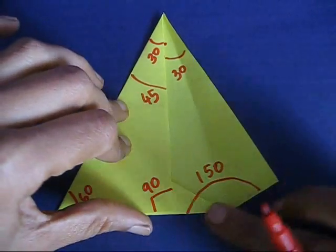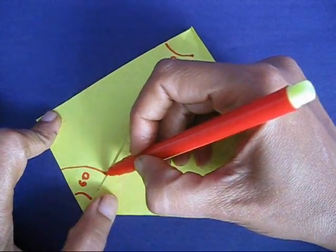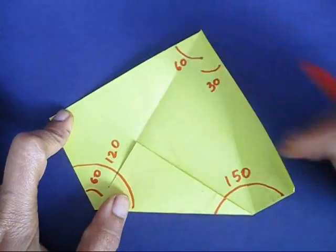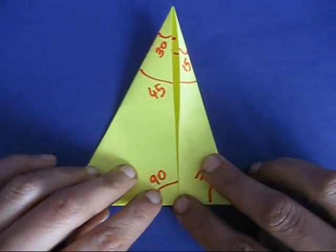Similarly, if you open the 60 degrees, you would get another 60 degrees and this big angle would be 120 degrees. So just using one square paper you can fold a dozen angles.